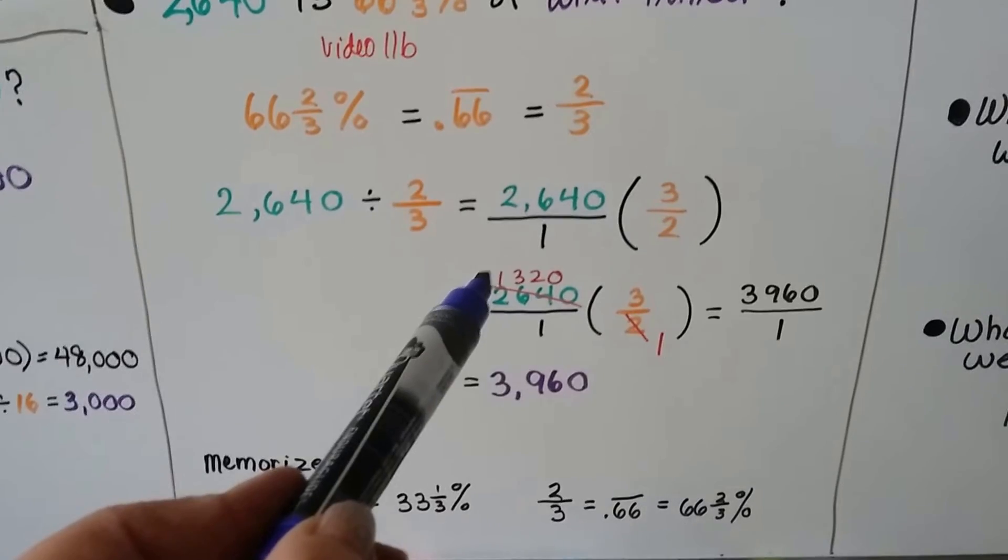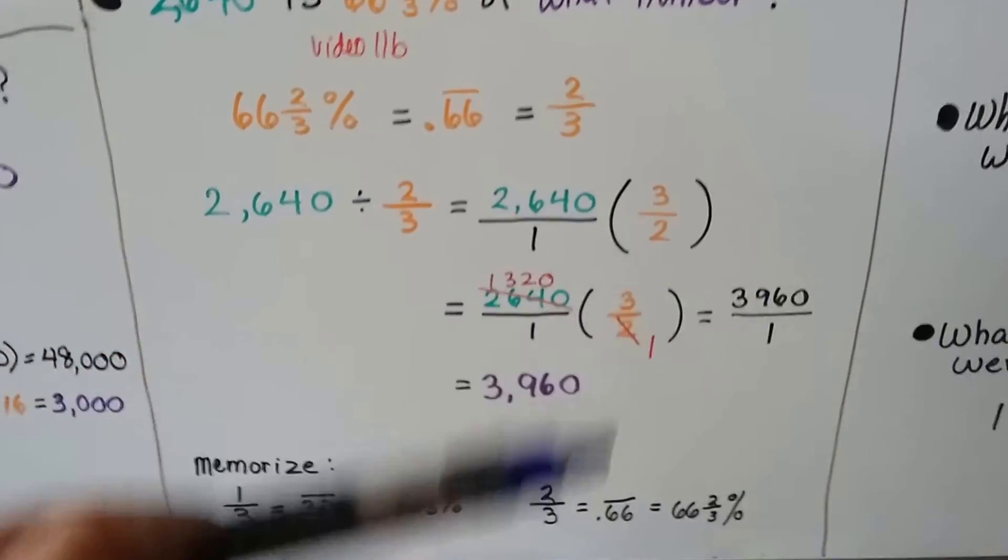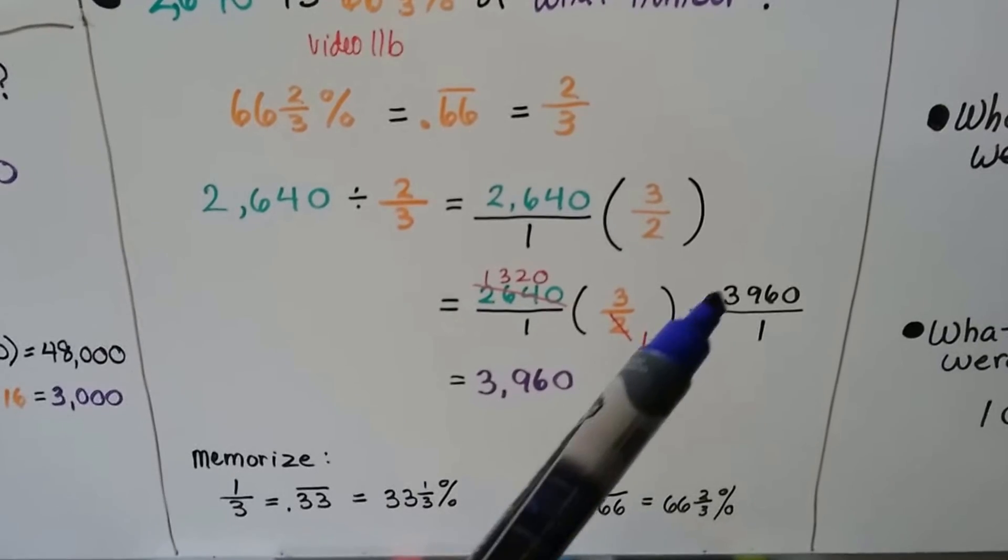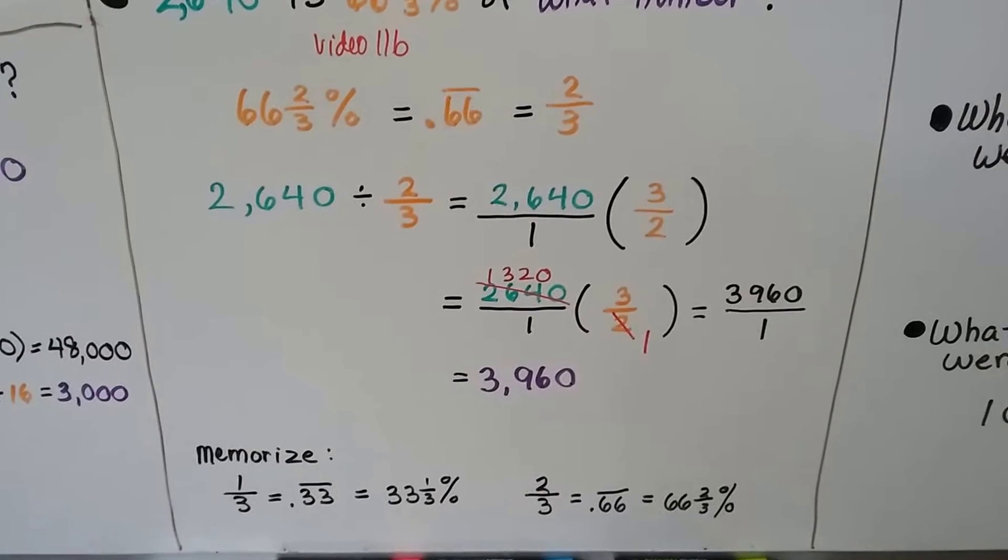So this cancels out as a 1,320. This cancels out as a 1. Now, when we multiply straight across, we don't have to reduce. We get 3,960 over 1 times 1 is 1, which reduces to 3,960.